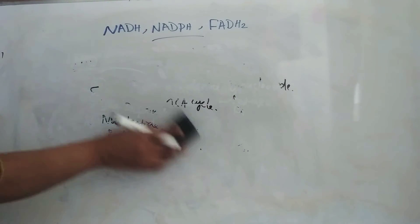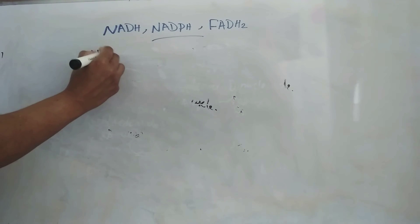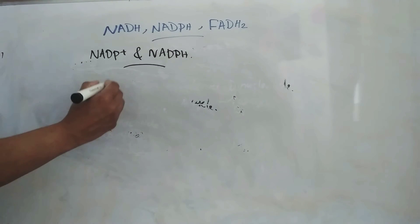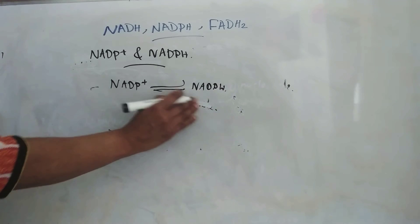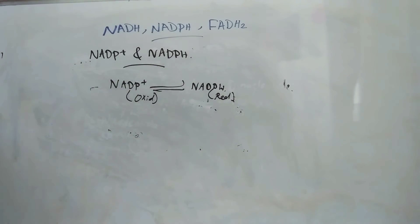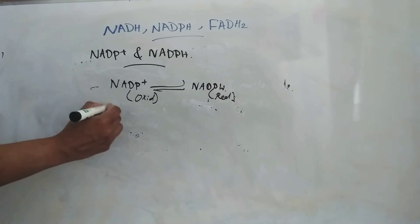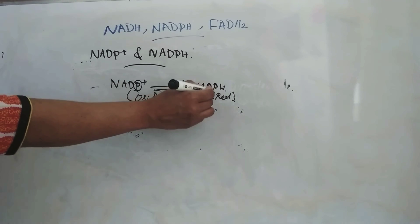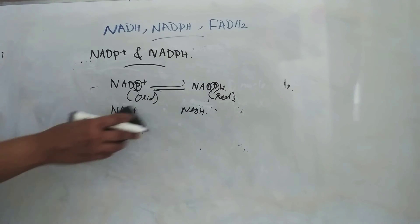Next we will see NADP and NADPH. NADP plus and NADPH. This is oxidized form and this one is reduced form. This NADP plus and NADPH which is differed from this NAD plus and NADH only by the presence of phosphate group. Here, NADP is the oxidized form and NADPH is the reduced form.